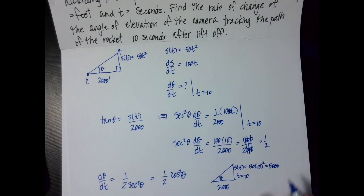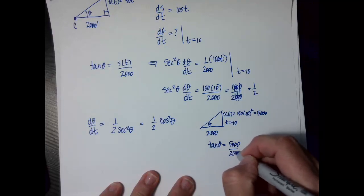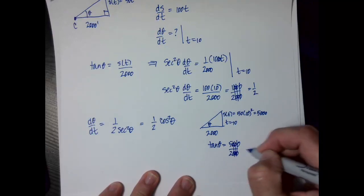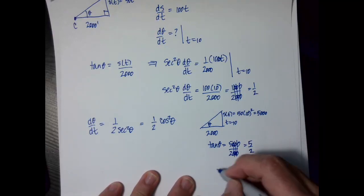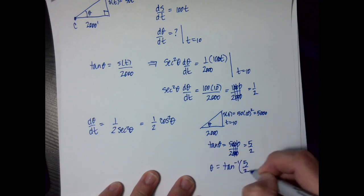So then I actually now know tangent. So I'm going to, tangent of theta is 5,000 over 2,000. So I get 5 over 2, and theta is going to equal the inverse tangent of 5 over 2.